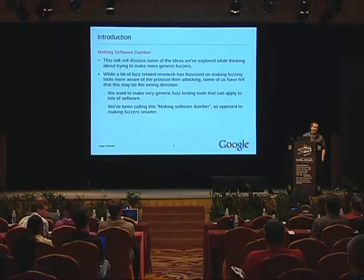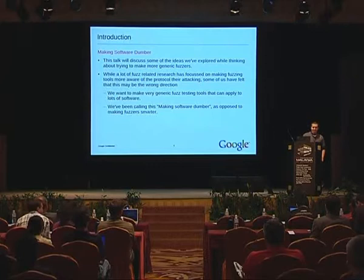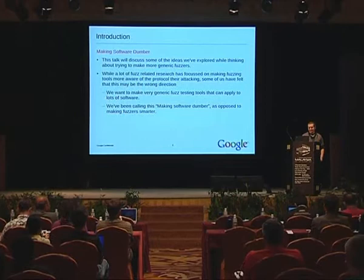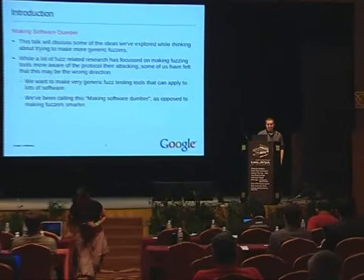The general idea is that while a lot of research is being done in fuzzing towards making smarter fuzzers — making them have a better understanding of protocols and states that a program can get into — we generally consider this the wrong direction. More research should be put into making software generically less smart. I've been calling this 'making software dumber' as opposed to 'making fuzzers smarter.'